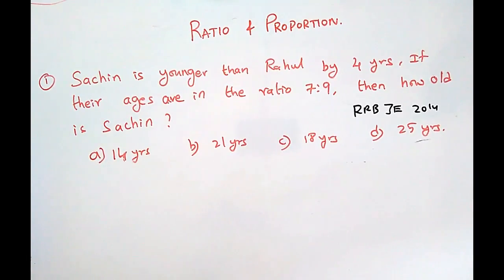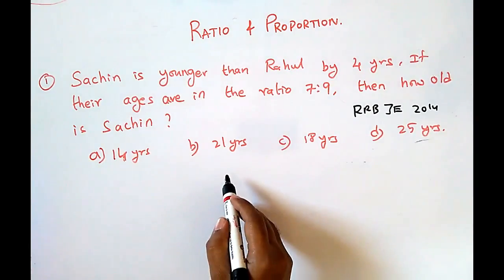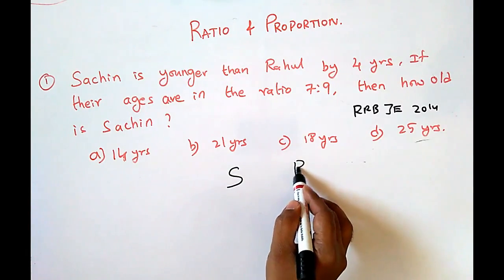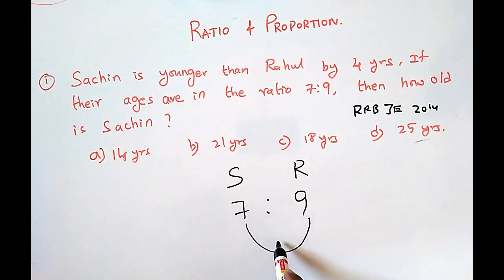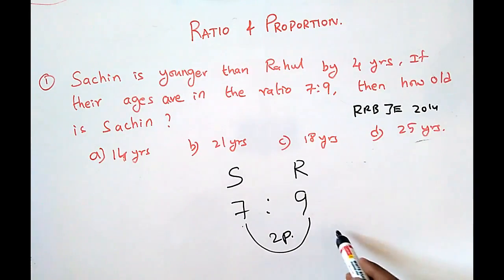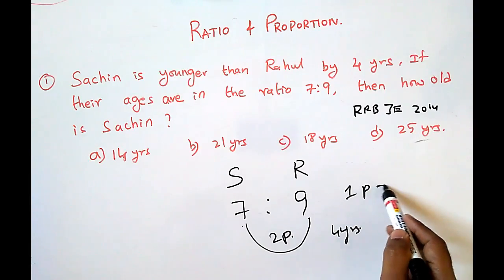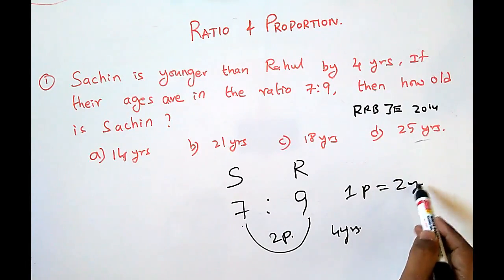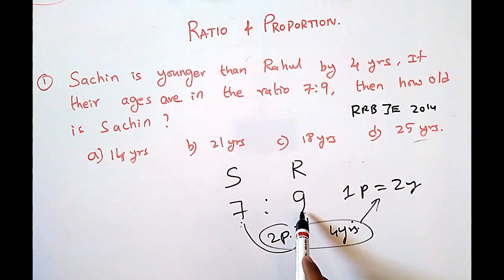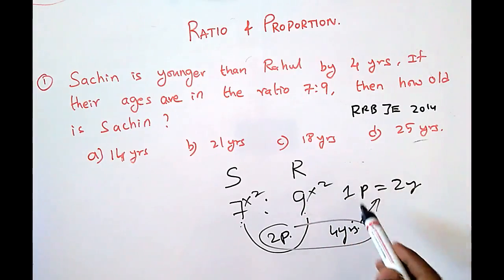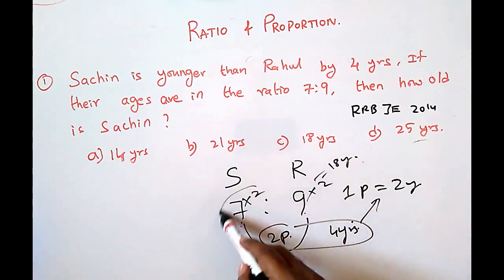The first question: Sachin is younger than Rahul by 4 years. If their ages are in the ratio 7 is to 9, then how old is Sachin? This is an RRBJE 2014 question. Sachin and Rahul's ages are in the ratio 7 is to 9. In ratios and proportions we consider ratios in parts — the difference in 7 parts and 9 parts is 2 parts. The question states Sachin is younger than Rahul by 4 years, so 2 parts equals 4 years, meaning 1 part equals 2 years. Therefore Sachin's age is 7 parts × 2 years = 14 years.